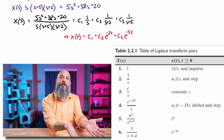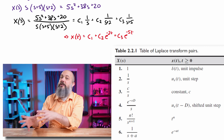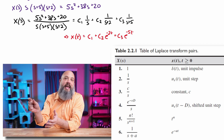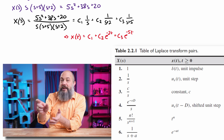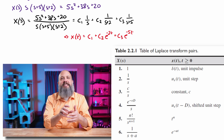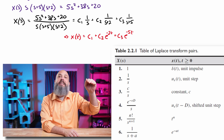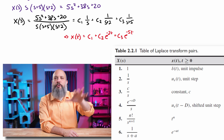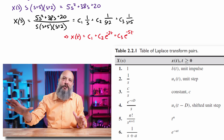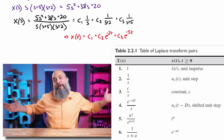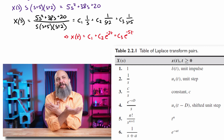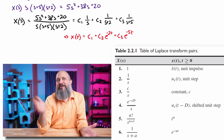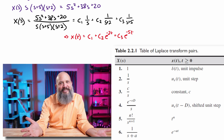Going back to the time domain, C1 over s is just going to be a constant. The 1/(s+2) — where 2 is 'a' — will be C2 times e to the negative 2t. And then C3 times e to the negative 5t. So we're going to have two exponential terms and one constant term in the final answer. Now all we have to do is solve for the coefficients, which is going to be the most tedious, longest part of this problem.